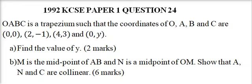This is question number 24, 1992 KCSC paper. We are told O, A, B, C is a trapezium such that the coordinates of O, A, B, and C are (0, 0), (2, -1), (4, 3), and (0, Y). Part A: find the value of Y. You get 2 marks.